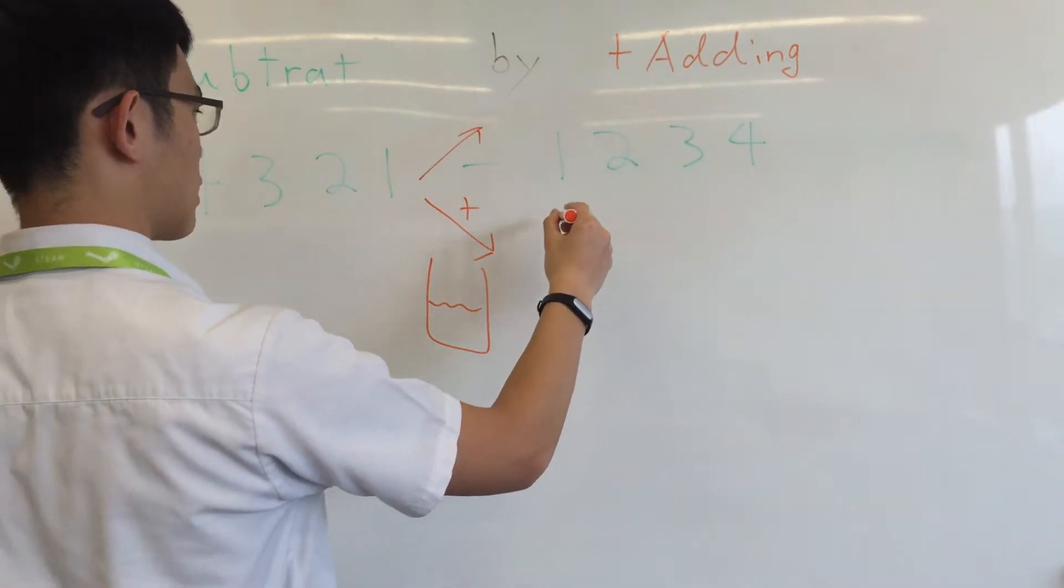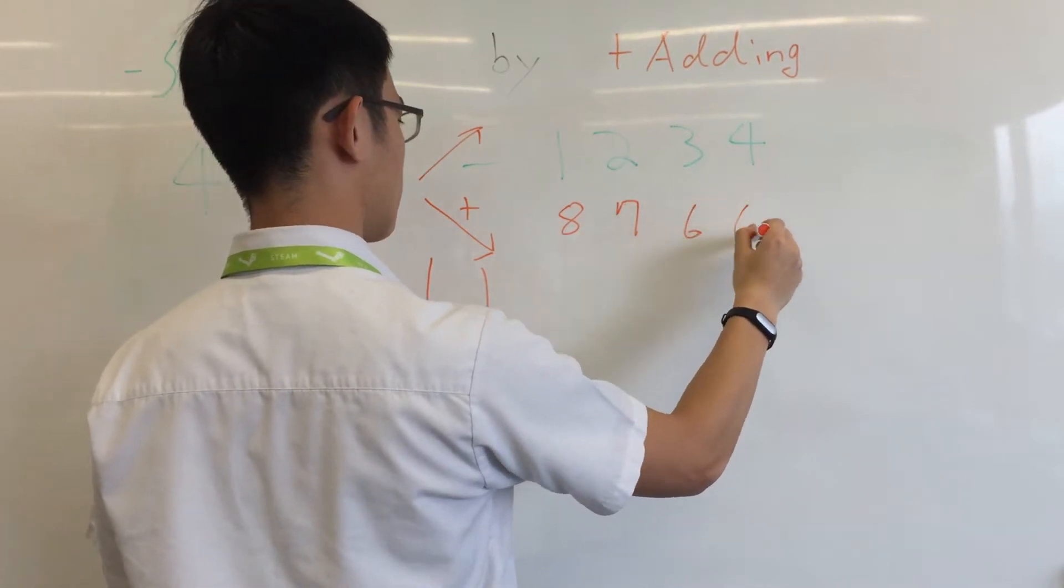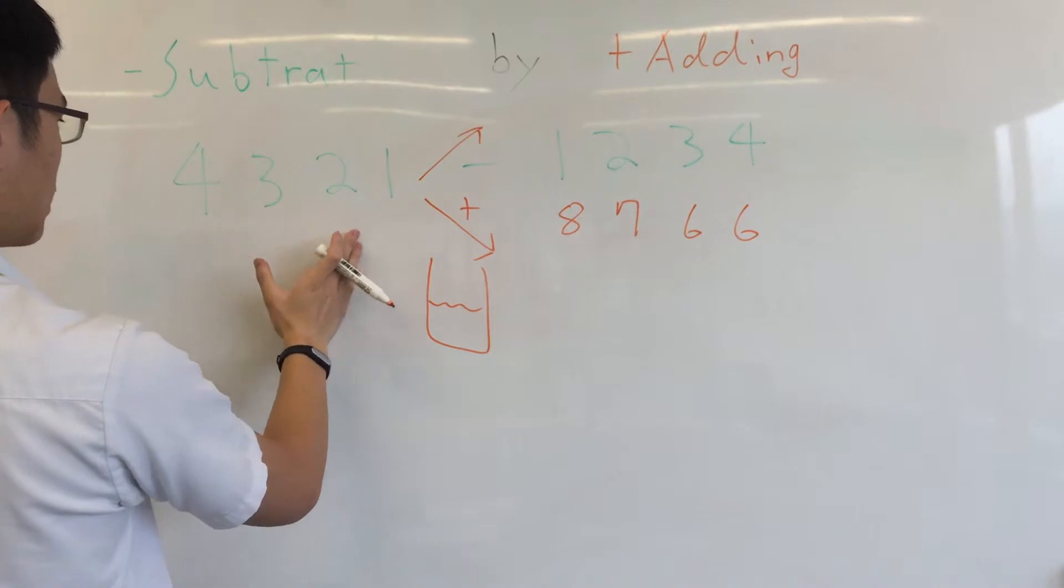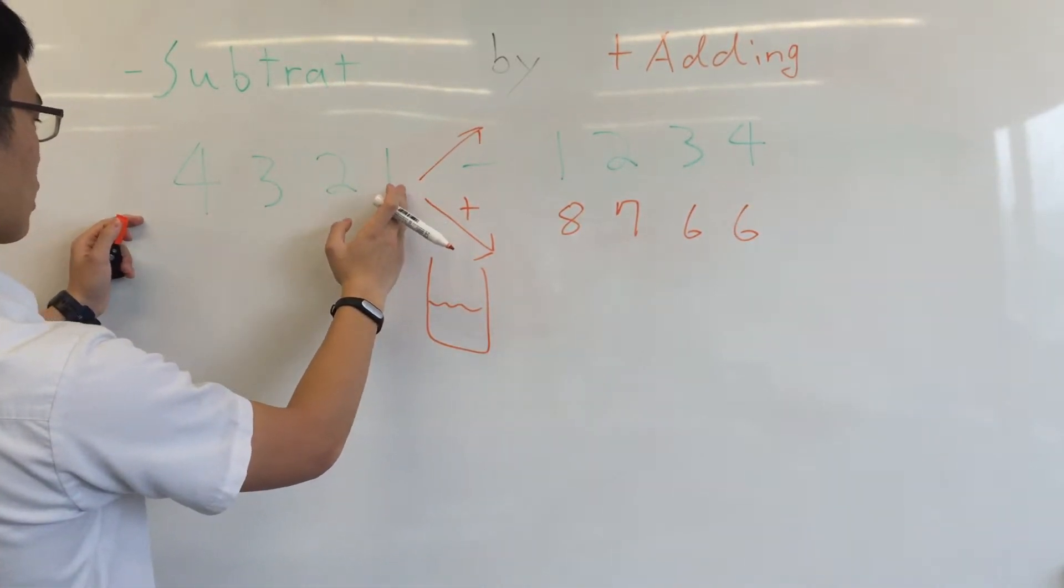So what you do here is these are the numbers that are left. And you take this and you add it here.